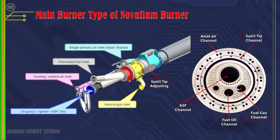This is a picture of the Novoflame burner type. There are several types of Novoflame produced by this well-known burner company, especially the low-NOx burner. The primary air for the Novoflame burner uses a fan and roots blower with a pressure between 100 to 800 millibar.